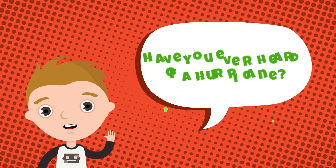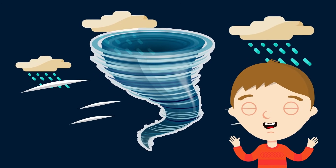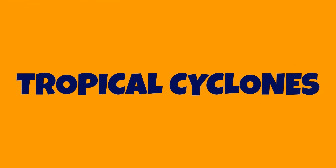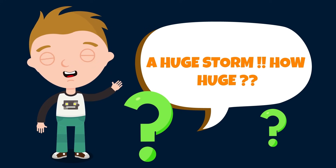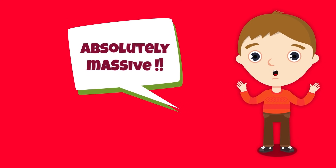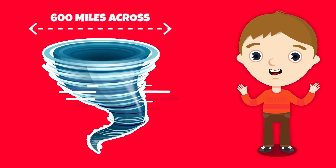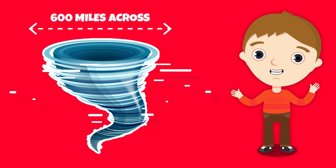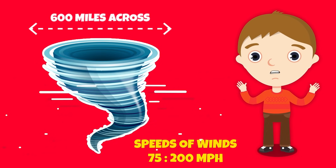Have you ever heard of a hurricane? A hurricane is a huge storm with speeding winds and lots of heavy rain. Did you know that scientists call them tropical cyclones? A hurricane can be up to 600 miles across and have strong rolling winds. These winds can reach speeds of 75 to 200 miles per hour.